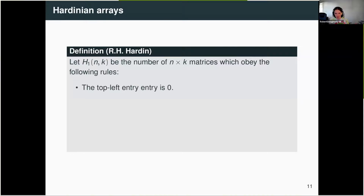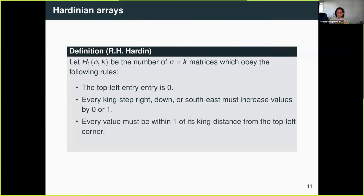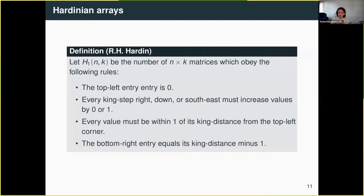The first rule is that the top left entry has to be zero. The next rule is that from any point of the matrix, every king step that you make to the right, down, or southeast has to increase the value by zero or one — where a king step means you move one to the right, one down, or one down and one to the right. The next rule is that every value must be within one of its king distance from the top left corner — the fewest number of steps the chess piece king would take to get there. Finally, the bottom right entry has to actually equal its king distance minus one from the top left corner.